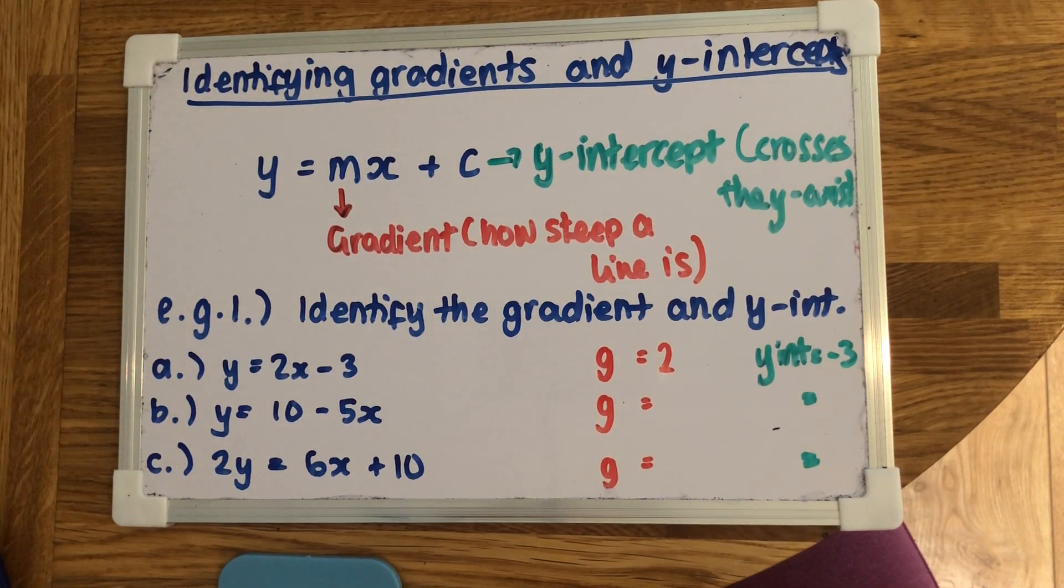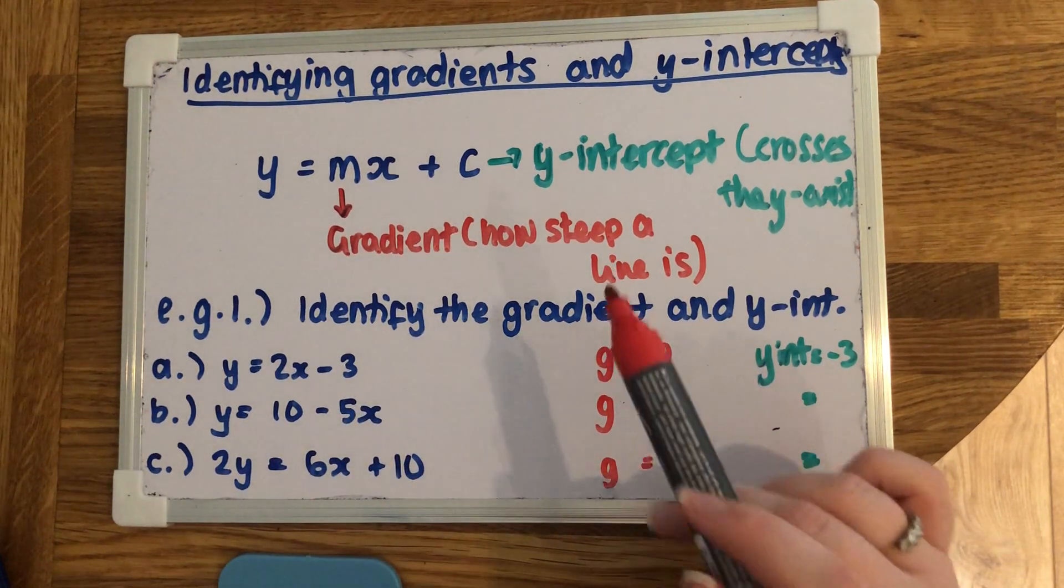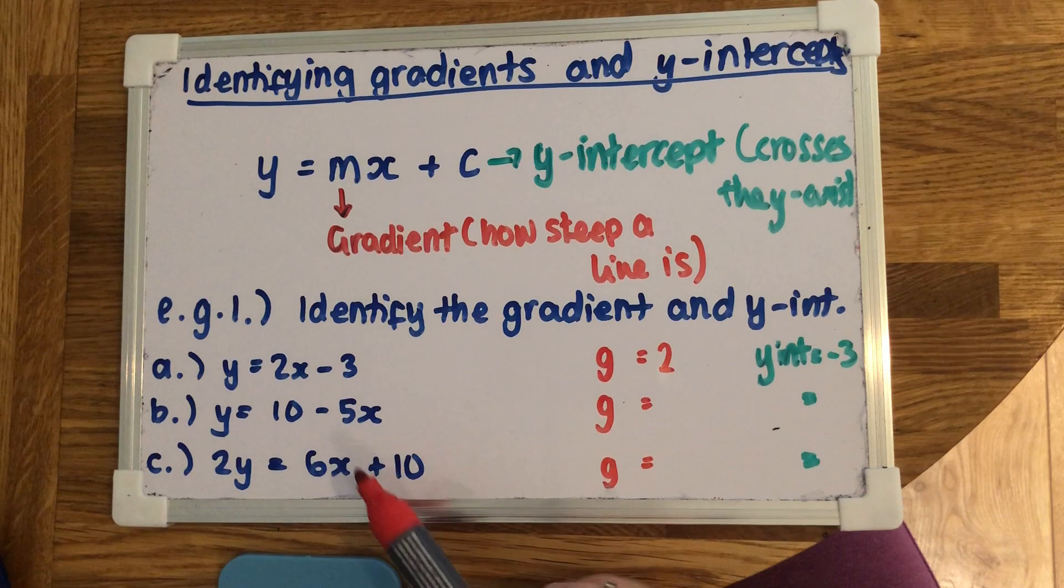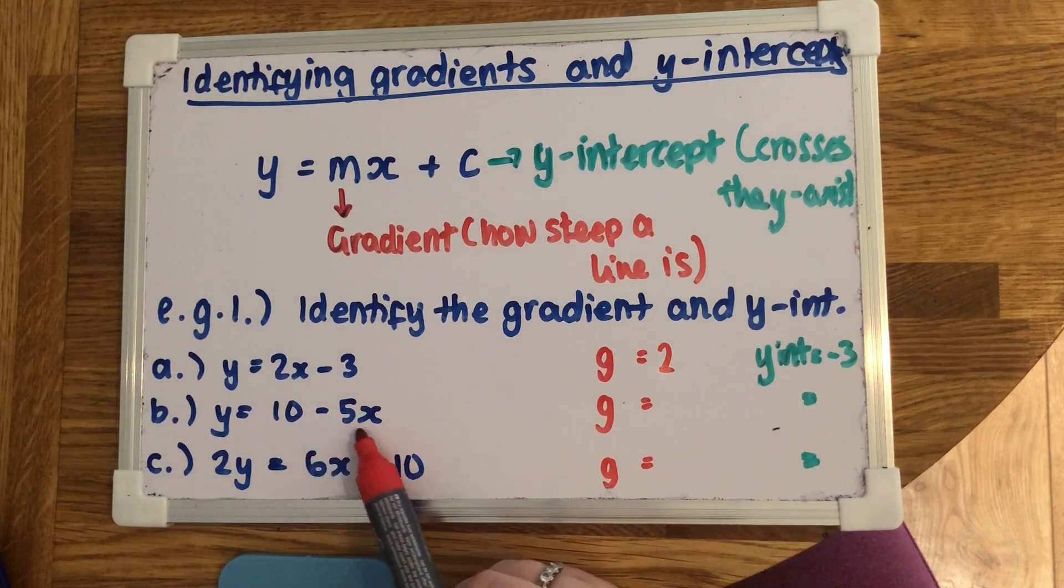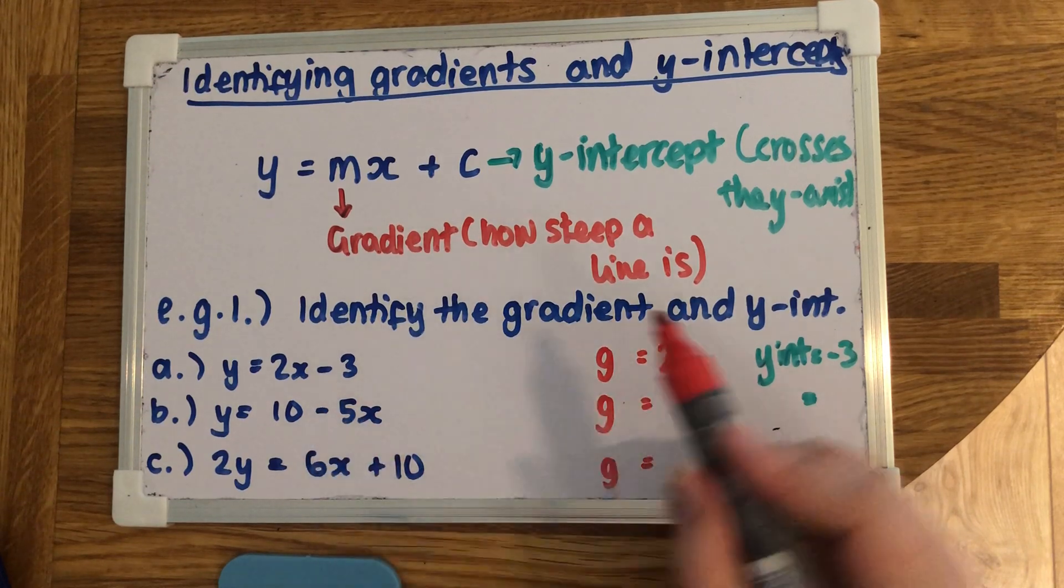Now they do try and trick you like on b, because they've put them the wrong way around, but still, just remember, gradient is always the number in front of the x. So if we look at the x, we've got this 5. Now you do include the sign as well. So the gradient is actually going to be negative 5.